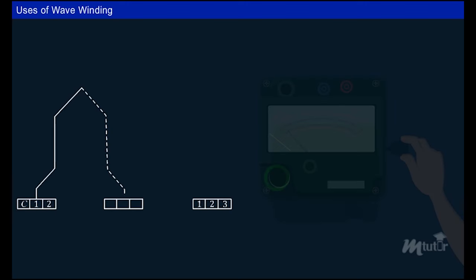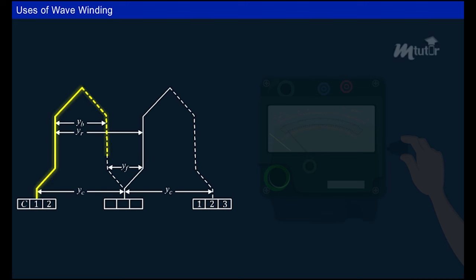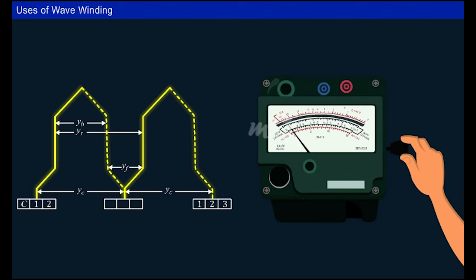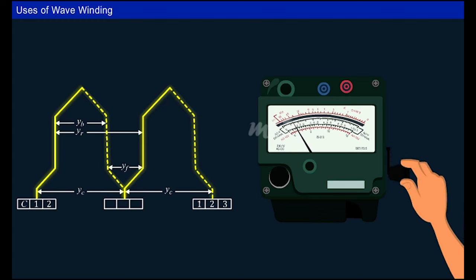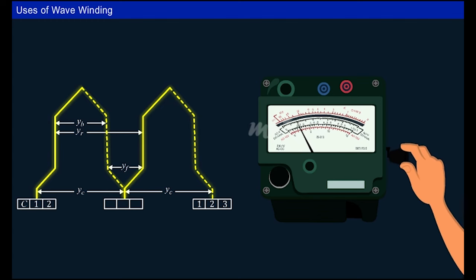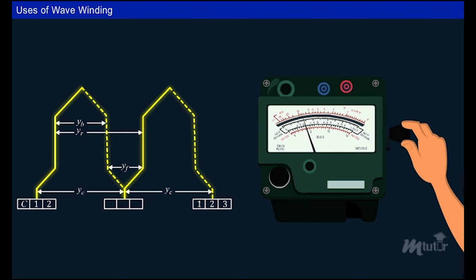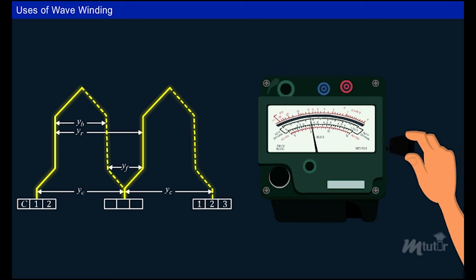In wave winding, the coils are connected in series, so the voltage of each winding gets added but the current remains the same. Therefore, this type of armature winding is used in applications requiring high voltage and low current, such as hand-cranked megohm meters for providing high test voltages.